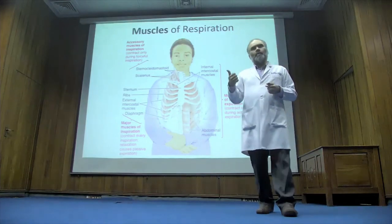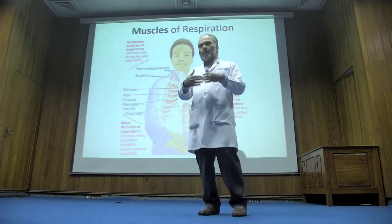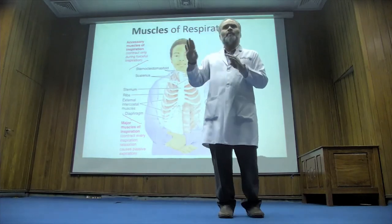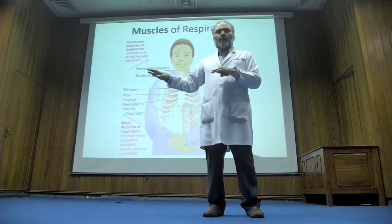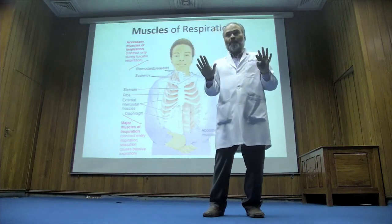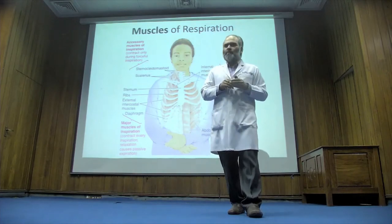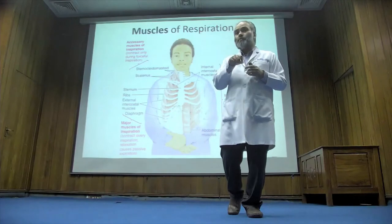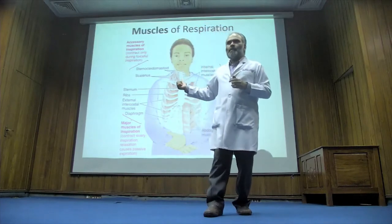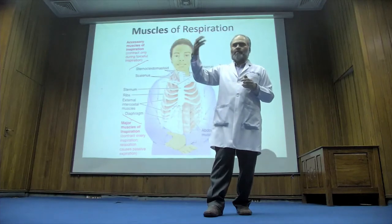Going back to the viva: the examiner asks what are the muscles of respiration. The way you break it down shows the examiner you are organized. You say: respiration involves inspiration and expiration. Then you say inspiration is further divided into two — normal at rest inspiration, for which we have the diaphragm, and exercise inspiration requiring accessory muscles.